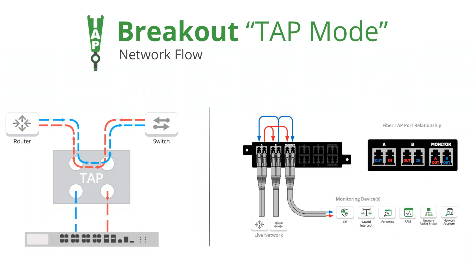it's taking everything that person A said and sending that traffic to port C, and everything that person B says, or the switch says, is sending that traffic out to port D. So, it's breaking out both sides of the conversation. West-east comes out port C, and east-west comes out port D, and that's why it's called breakout mode.